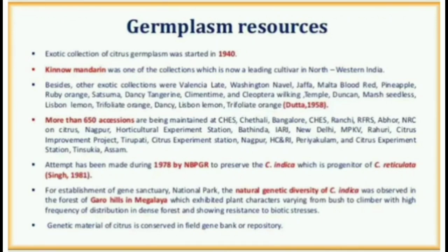More than 650 accessions are being maintained at CHES Chitali Bangalore, CHES Ranchi, RFRS ABOR, NRC on Citrus Nagpur, Horticultural Experiment Station Batinda, IARI New Delhi, MPKV Rahuri, Citrus Improvement Project Tirupati, Citrus Experiment Station Nagpur, SC and RI, and Citrus Experiment Station Tinsukia, Assam. An attempt was made during 1978 by NBPGR to preserve C. indica, which is a progenitor of C. reticulata, for establishment of a Gene Sanctuary National Park. The natural genetic diversity of C. indica was observed in the forests of Garo Hills in Meghalaya, exhibiting plant characters varying from bush to climber with high frequency of distribution in dense forest and showing resistance to biotic stresses. Genetic material of Citrus is conserved in field gene banks.